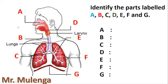When you look at the part labeled A, what is the name of this part? The part labeled A is called the nasal cavity. Then the part labeled B, this is called the windpipe or the trachea. The part labeled C right here, these are called the bronchi.